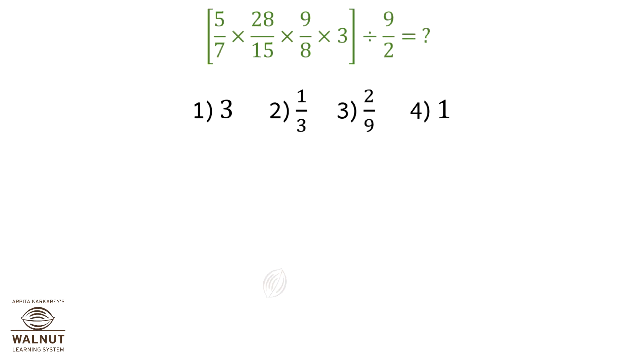5 upon 7 into 28 upon 15 into 9 upon 8 into 3, the whole in brackets, divided by 9 upon 2. Let's simplify to get the answer.